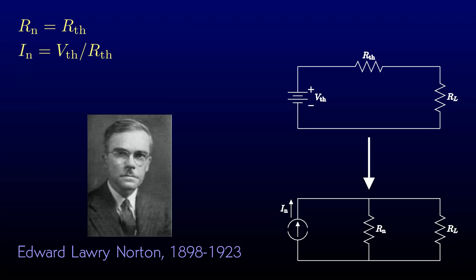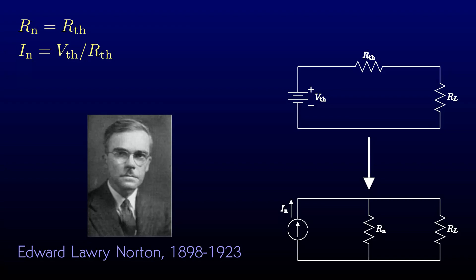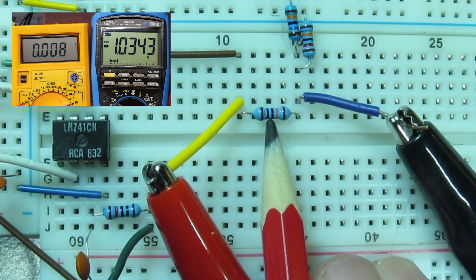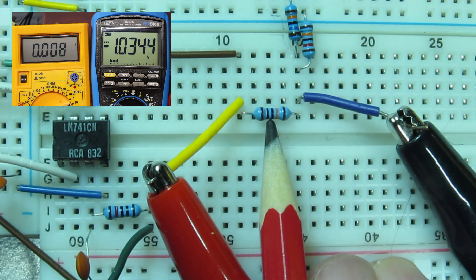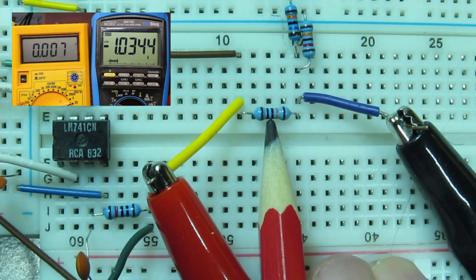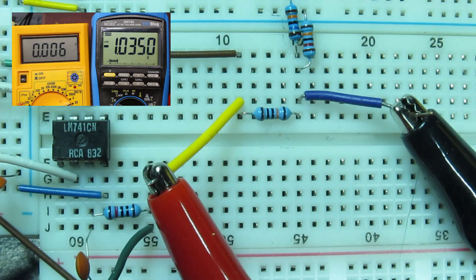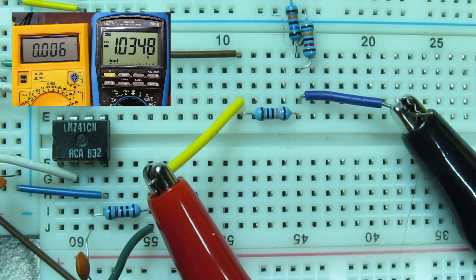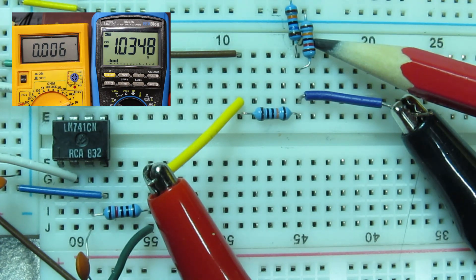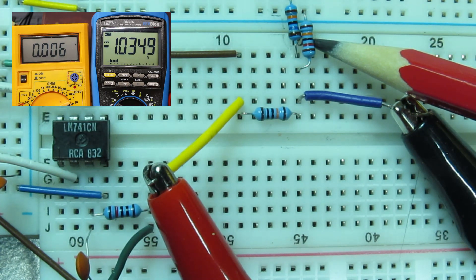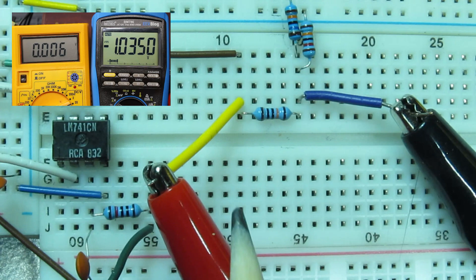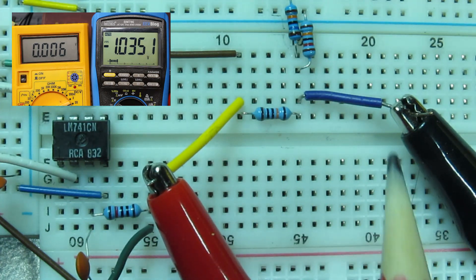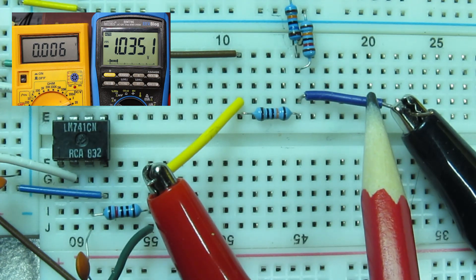Instead, I'm going down to the cave to breadboard a divider. So here I've hooked up that three-resistor network. I've got 100K going to its input, 160K going up to the 12V supply, and 120K going down to the minus 12V supply. The yellow meter is looking at the input voltage and the blue meter is looking at the output voltage.